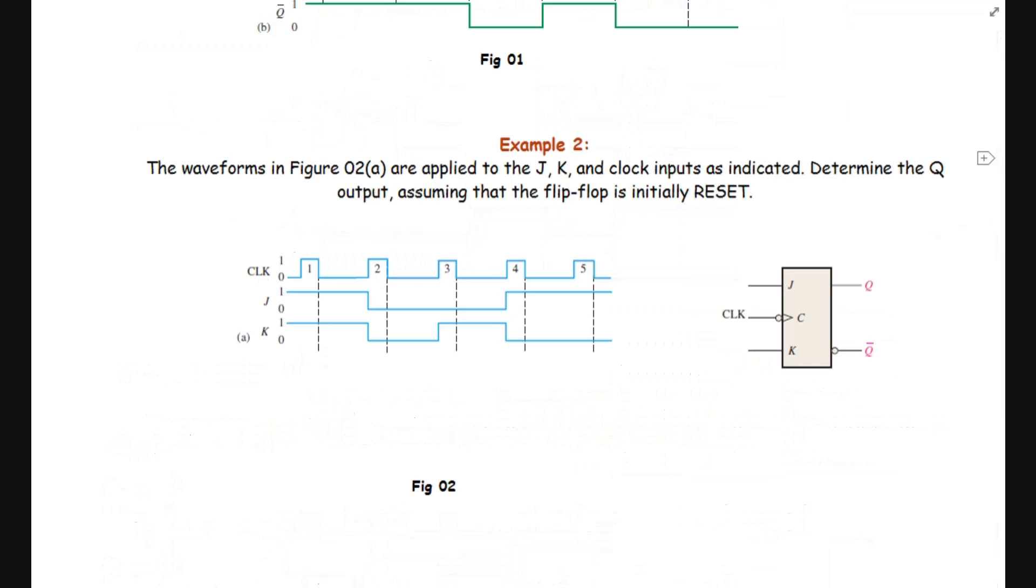Example 2: The waveforms in Figure 02A are applied to the J, K, and clock inputs as indicated. We have three waveforms, each given for different inputs such as clock input, J and K input. Determine the Q output assuming the flip-flop is initially reset. The initial condition of the flip-flop is reset, and we have to determine the Q output of this flip-flop.